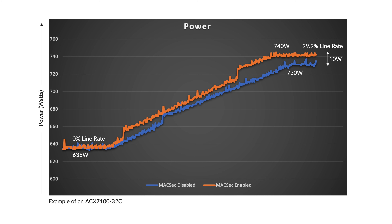In this example, we compare the power used on an SCX7100 based on traffic when MACSEC is enabled versus disabled. In this router, MACSEC is done at the PHY level, and you can see at least 10 watts of difference.